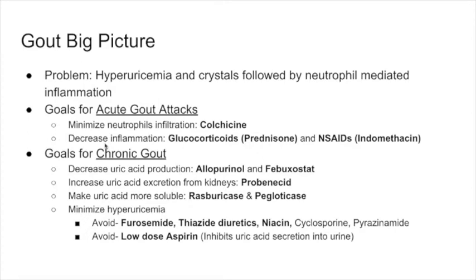For chronic gout, the first goal is to decrease uric acid production using allopurinol and febuxostat. The second is to increase uric acid excretion from the kidneys using probenecid. If uric acid is already forming crystals, we can make them more soluble using rasburicase and pegloticase.